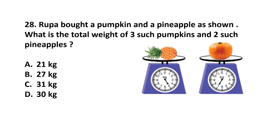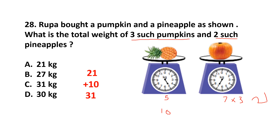Question number 28. Rupa bought a pumpkin and a pineapple. What is the total weight of 3 such pumpkins and 2 such pineapples? The weight of 1 pumpkin is 7 kg, so 3 pumpkins = 7 multiplied by 3 = 21 kg. 1 pineapple is 5 kg, so 2 pineapples = 10 kg. Total weight = 21 plus 10 = 31 kg. The answer is option C.